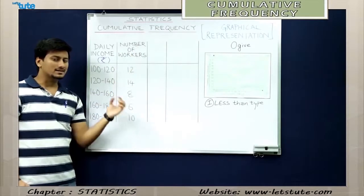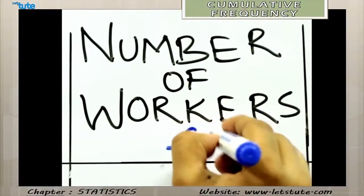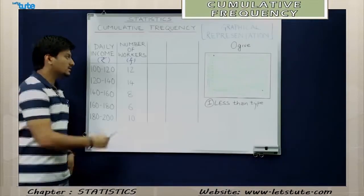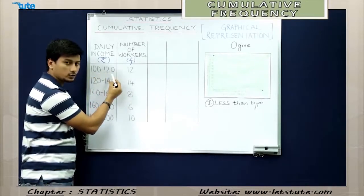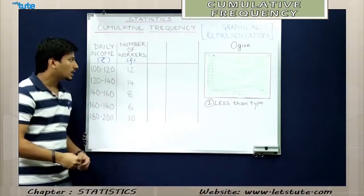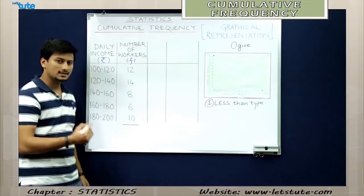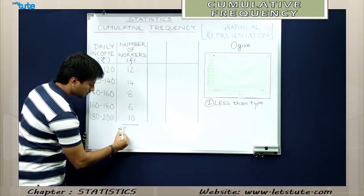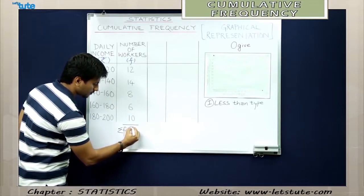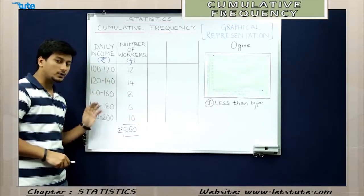The column 'number of workers' is nothing but the frequency column, denoted as F. Frequency is the rate at which something occurs. That means 12 workers have a daily income of 100 to 120 rupees, 14 workers have a daily income of 120 to 140 rupees, and so on. The total frequency is denoted as sigma F. So 12 plus 14 plus 8 plus 6 plus 10 gives us 50. This is the frequency distribution.